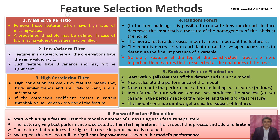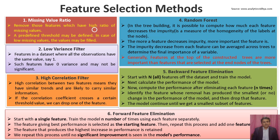This slide shows various feature selection methods that can be used for effective feature selection. I have added a lot of text to show many things on the same slide for comparison. The first feature selection method is the missing value ratio. It removes those features which have a high ratio of missing values. A predefined threshold may be defined, and features with values below it may be failed — so we remove features with a high number of missing values.